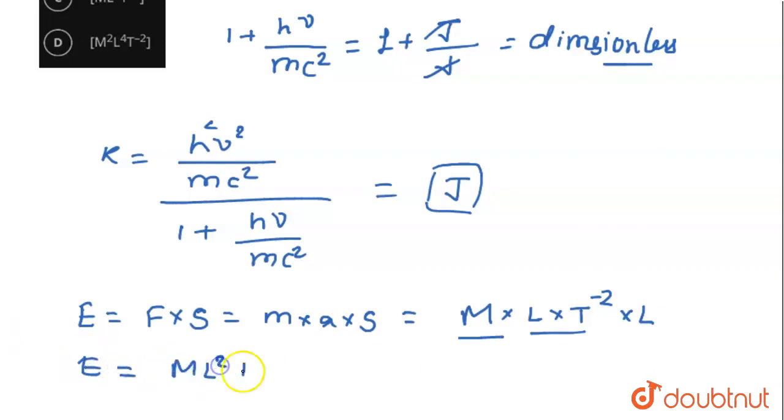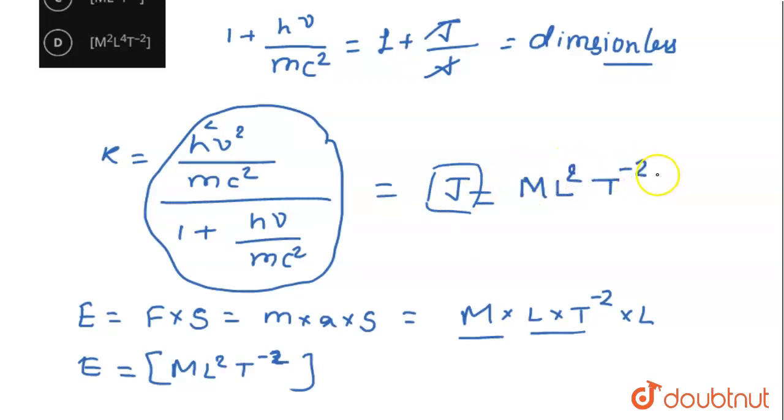The dimensional formula is M L square T minus 2. So this dimensional formula is the energy or joule. The overall expression's dimensional formula will be equal to M L square T minus 2.